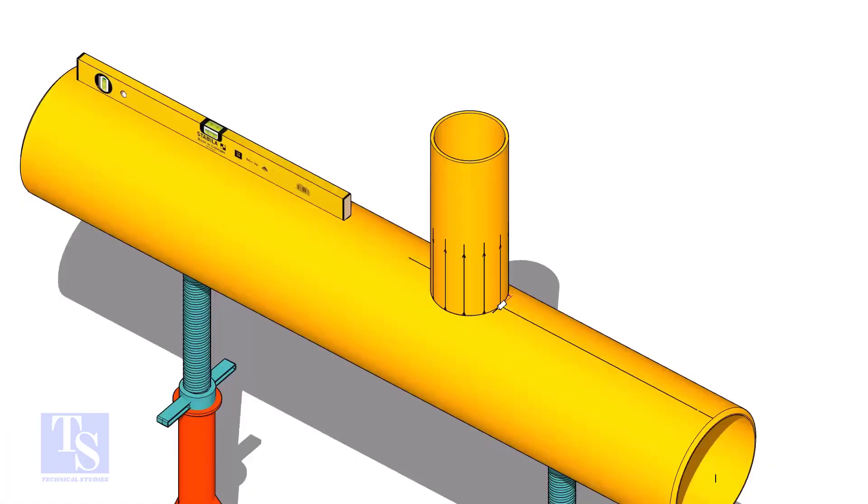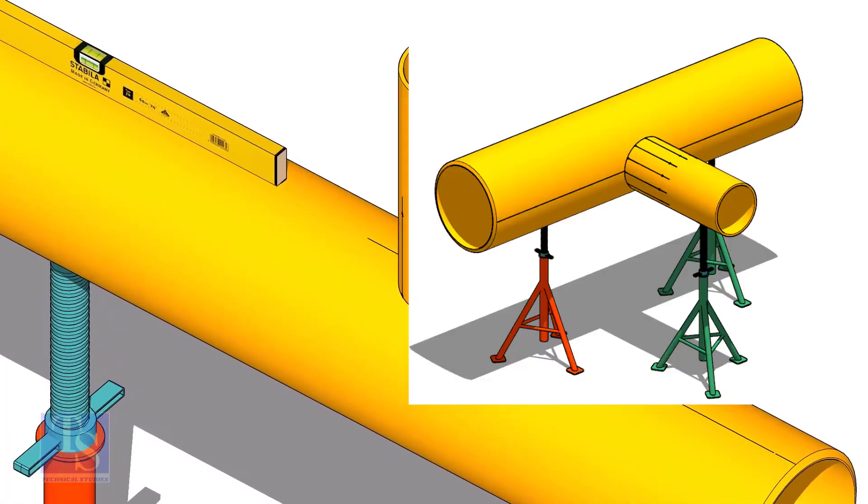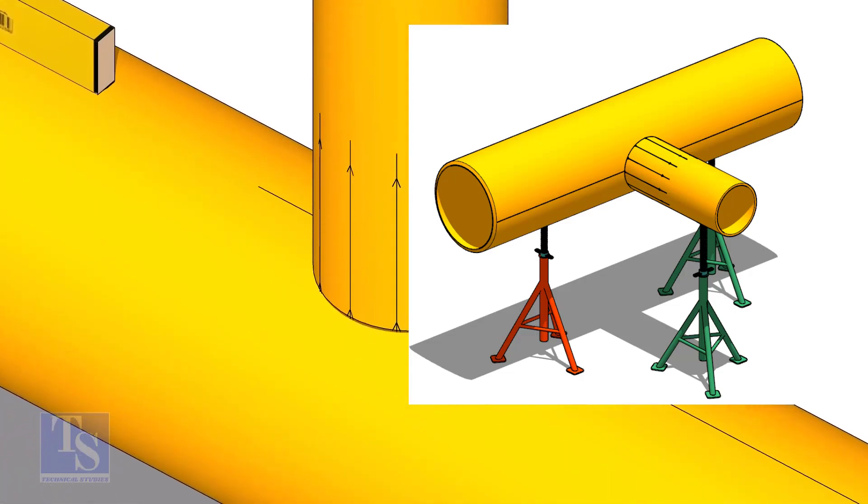Tack weld the branch on the header just to stand it vertically. If the pipes are large, you can do it in the horizontal position also.